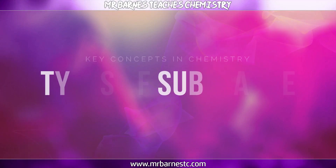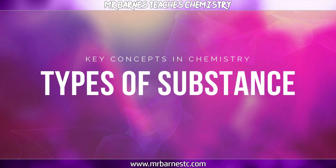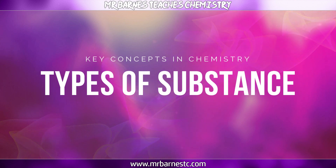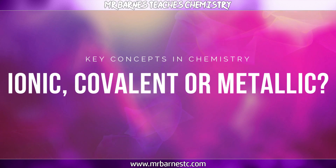Hi guys, welcome to this summary video on ionic, covalent, and metallic bonding, which is going to look at all three different types of bonding and their properties, as well as how you can work out from data and an experiment whether you have an ionic, covalent, or metallic substance. We're going to start off with a recap of all the main things you need to know about the three different types of bonding.